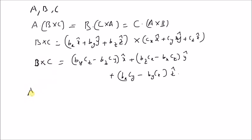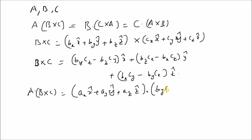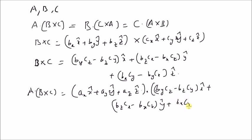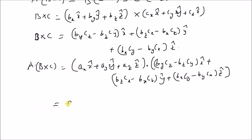Now we want to find the dot product A dot B cross C, which equals (AX x-hat + AY y-hat + AZ z-hat) dotted with the cross product vector. Only terms corresponding to the same unit vectors survive, giving: AX·(BY·CZ − BZ·CY) + AY·(BZ·CX − BX·CZ) + AZ·(BX·CY − BY·CX).